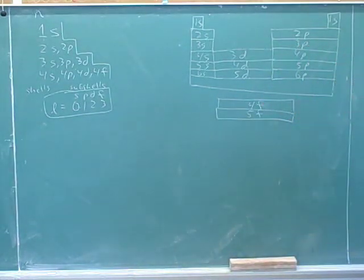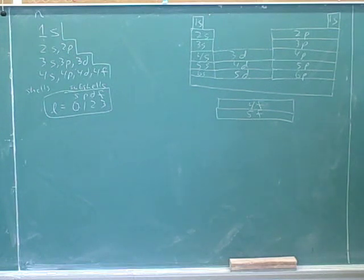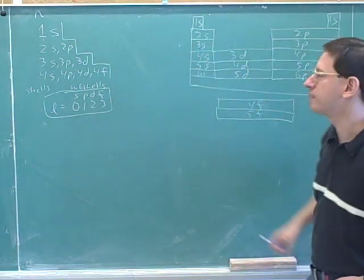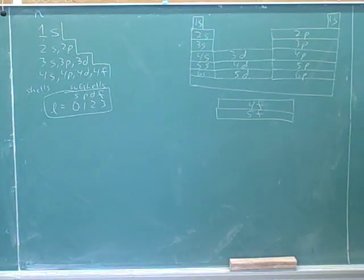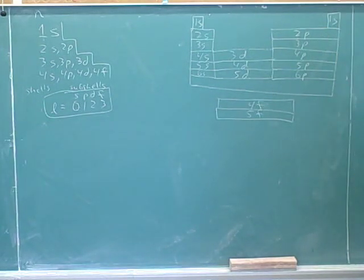How many orbitals are there in the s-block? One, because there's only room for two electrons. And how many orbitals are there in the p-block? Three, and that would give us six electrons.